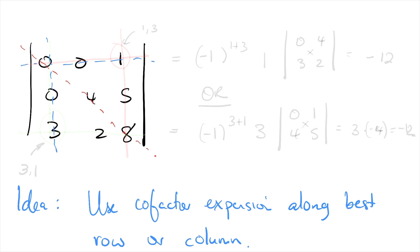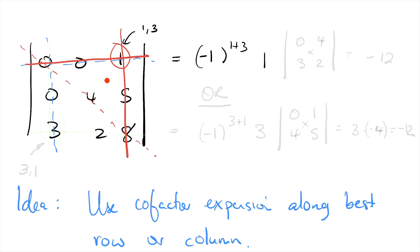The non-zero entry 1 is in the 1,3 position. Expanding along the first row, we get 0 + 0 + (−1)^(1+3) × 1 × det of what's left when we erase that row and column, which is the determinant of the 2×2 matrix 0, 4, 3, 2. That gives us 1 × 1 × (0·2 − 4·3) = 1 × (−12), which is −12.